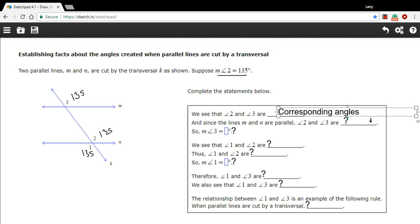And since lines M and N are parallel, angle 2 and angle 3 are what? And in this case, I think what they're getting at is the fact that corresponding angles are the same measure, and the word they like to use in geometry for that is congruent. And then it says, so the measure of angle 3 is what? And we took a moment to figure that out before we started reading this, so that's 135 degrees.